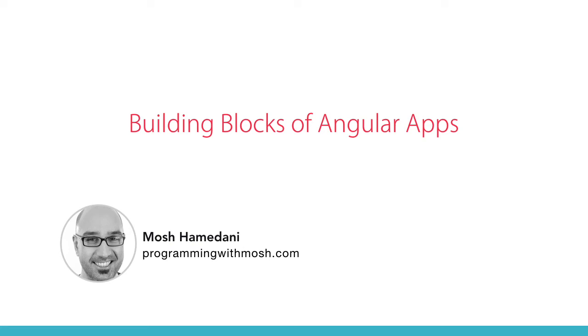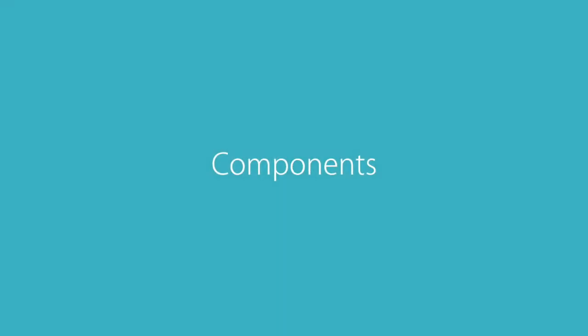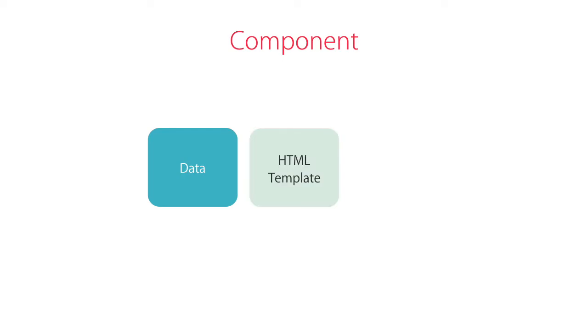Now that you have some basic familiarity with Angular, let's look at the building blocks of Angular apps. At the heart of every Angular app, we have one or more components. In fact, in a real-world app, we have tens or hundreds of components. But what is a component? A component encapsulates the data, the HTML markup, and the logic for a view, which is the area of the screen that the user sees.